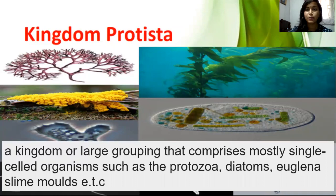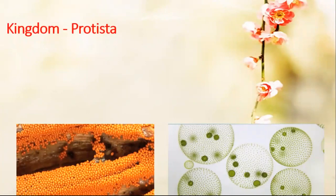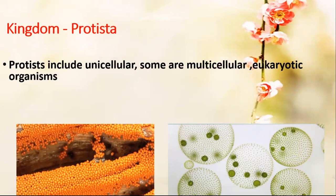Kingdom Protista is a kingdom that consists of a large group of organisms, and mostly they are single-celled organisms, including protozoa, diatoms, slime molds, and others. Their general characteristics: Protista includes unicellular organisms — some might be multicellular, but mostly they are unicellular.